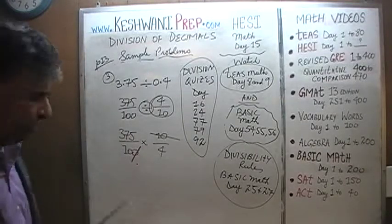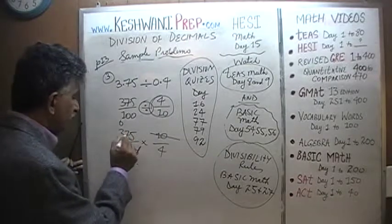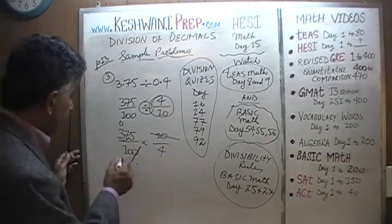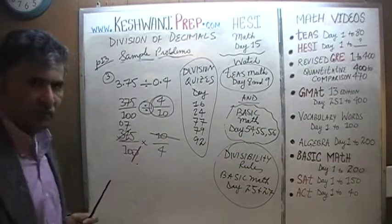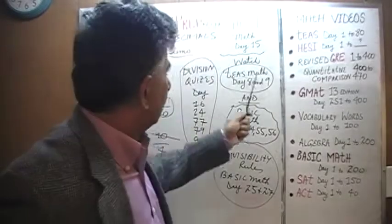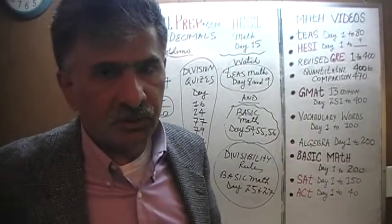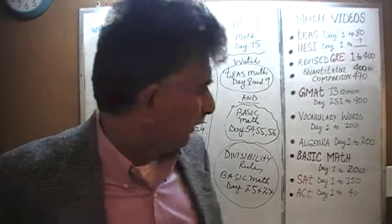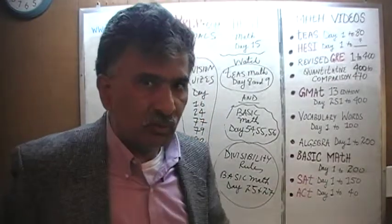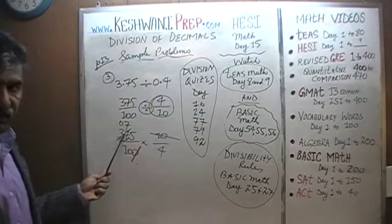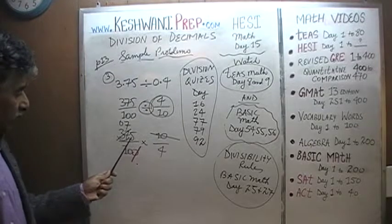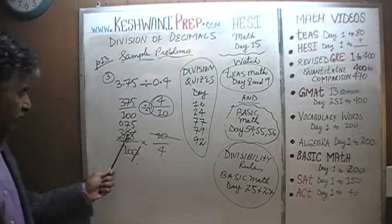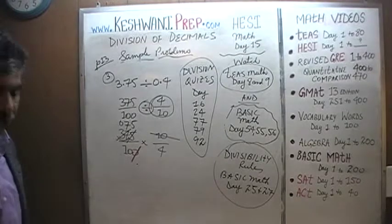Divide top and bottom by 5. How many 5s does 3 have? None — 3 joins 7 to make 37. 37 has seven 5s (35). Cross out 37, put down 7, with remainder 2. That 2 joins 5 to make 25, which has five 5s. Divide 10 by 5 to get 2. So we are left with 75 over 2 times 4, which is 75 over 8.